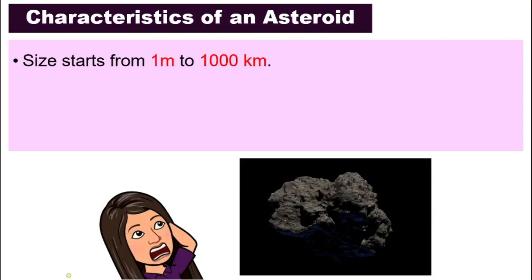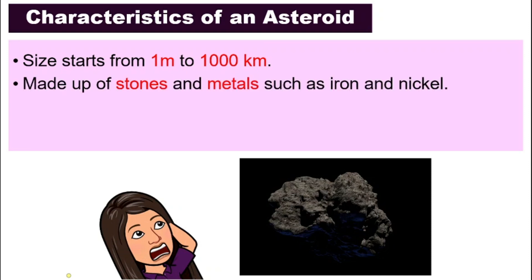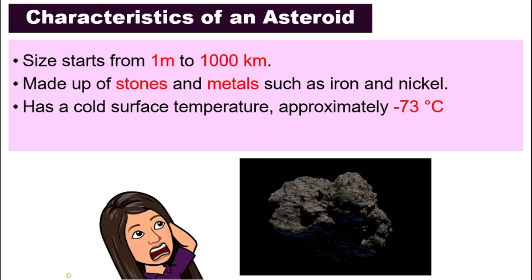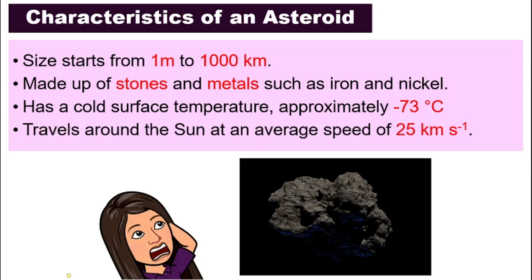Some characteristics of an asteroid: their size starts from about 1 meter to a thousand kilometers. They are made up of stones and metals such as iron and nickel — not a surprise, since meteoroids come from asteroids. Asteroids have a cold surface temperature of about negative 73 degrees Celsius, and they travel around the sun at an average speed of 25 kilometers per second — a little slower than meteoroids, but still very impressive.